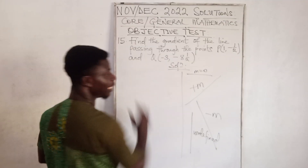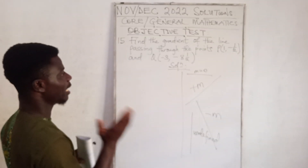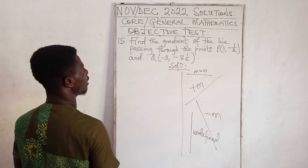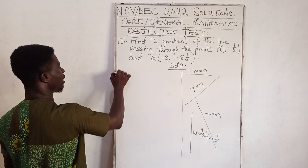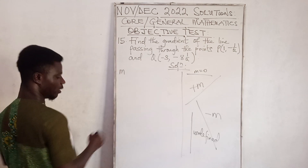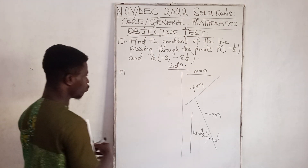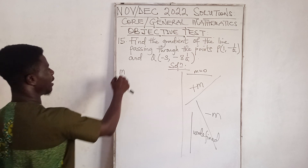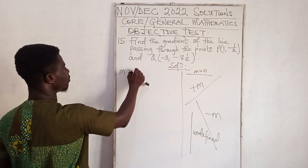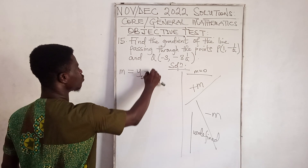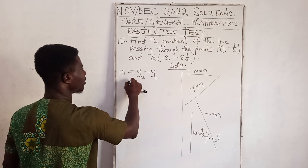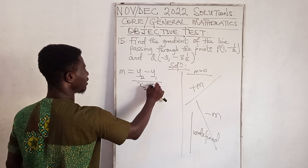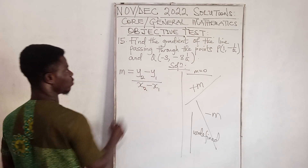The formula for gradient is M = (Y2 − Y1) / (X2 − X1). Here X1 = 1, Y1 = −½, X2 = −3, and Y2 = −8½.